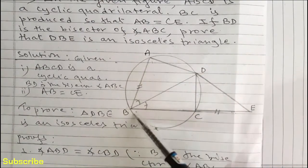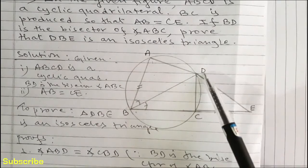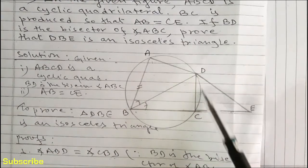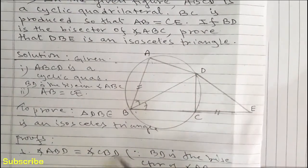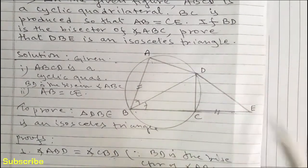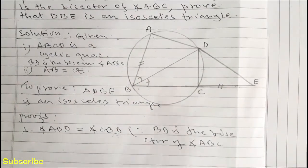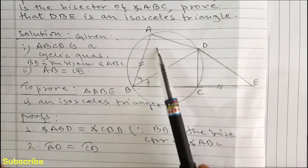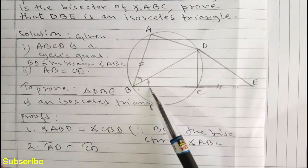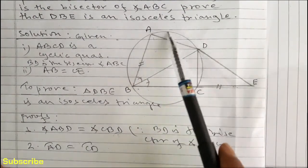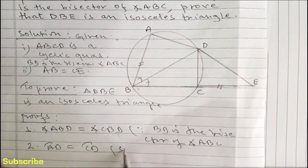Equal angles at the circumference subtend equal arcs. Angle ABD is subtended by arc AD and angle CBD is subtended by arc CD. Since angle ABD and angle CBD are equal, so they will subtend equal arcs. So in statement number 2, we can write arc AD is equal to arc CD, because equal angles at the circumference subtend equal arcs — from statement number 1.